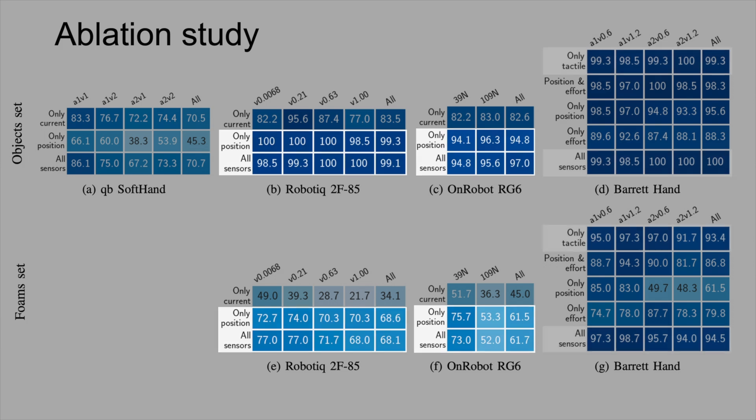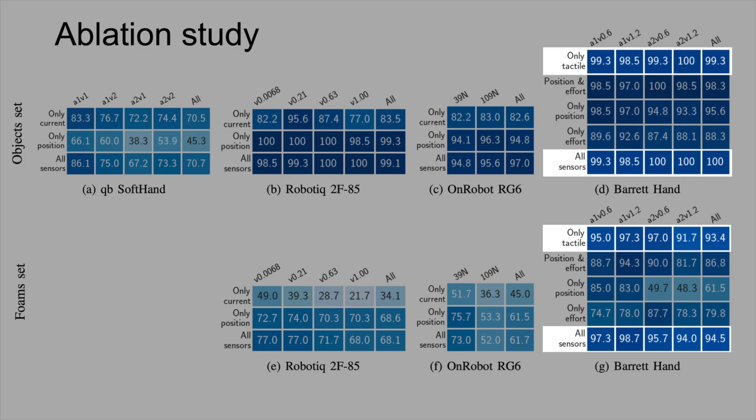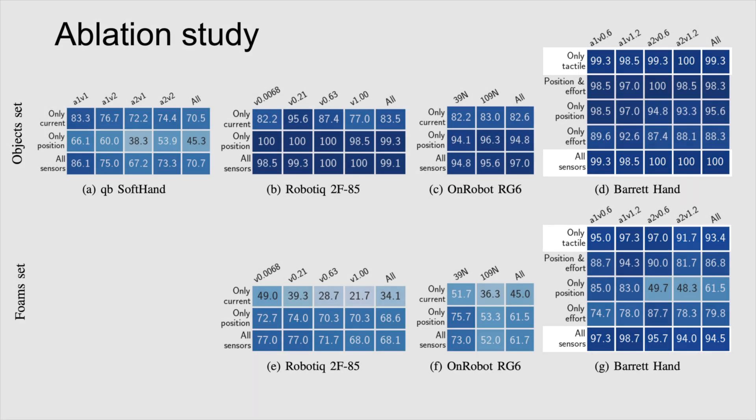On the Barrett hand, tactile sensors are particularly notable, nearly matching the performance of all sensors combined on the challenging foam set. Additionally, faster compression speeds tend to degrade classification accuracy.